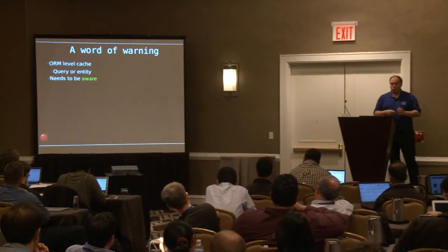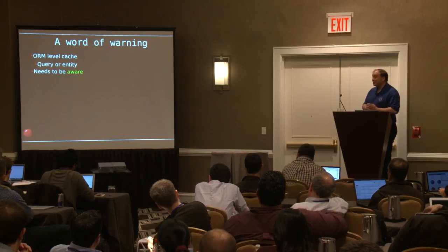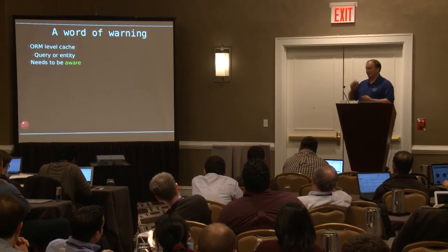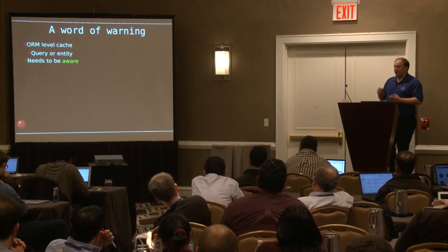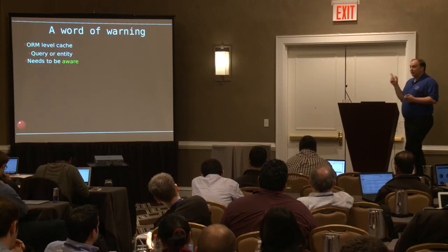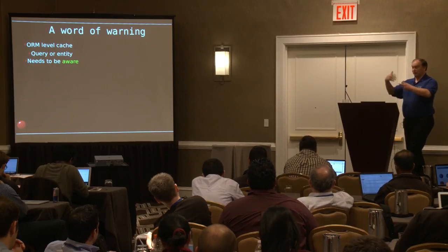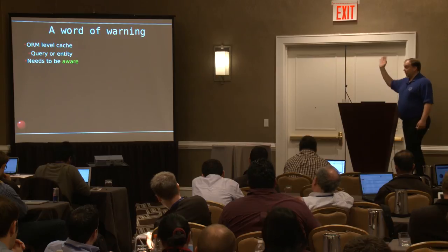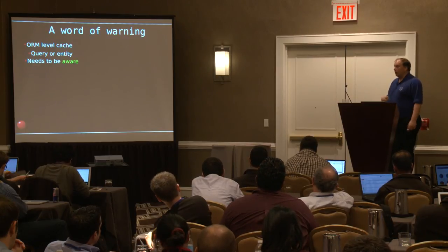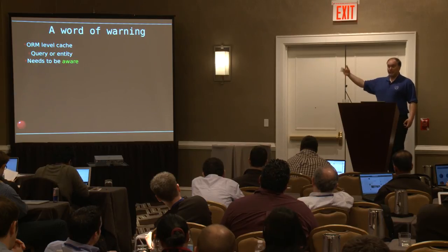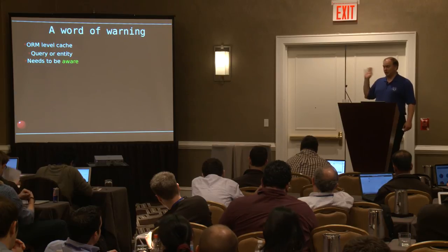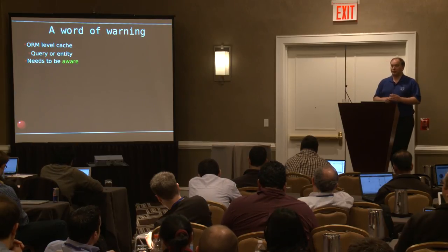One other warning: ORM-level caching. Hibernate does caching at two levels: query level and entity level. If you have that enabled, very interesting things can happen — you can get back rows from different times mixed together. You need to either turn that off (which is what we did), or make it aware of the time travel by keying the cache including the timestamp. You cannot leave it on in default mode; that will give you really funky results.